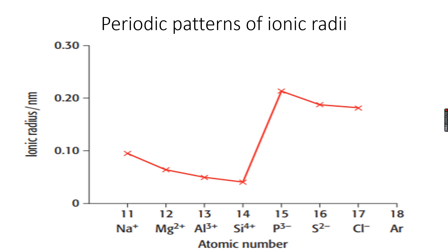Now if you look from phosphorus to chlorine — if you look at the ions from the phosphide ion to the chloride ion — ionic radius decreases. This is again because nuclear charge increases, so the force of attraction between the nucleus and the outermost shell increases, and as a result the ionic radius decreases from the phosphide ion to the chloride ion.